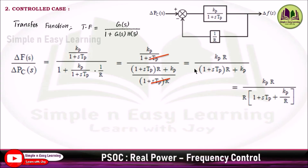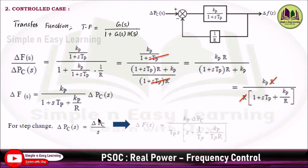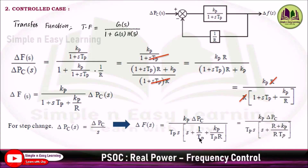Taking R out from the denominator gives 1 plus STP plus KP/R, and cancelling the two R terms simplifies the equation. Bringing del PC(s) to the right-hand side and substituting the step change del PC(s) equals del PC divided by s, we get KP times del PC divided by TP times S. In the denominator, taking TP out gives S plus 1/TP plus KP divided by TP times R, and taking LCM in the second and third terms gives R plus KP divided by R times TP.